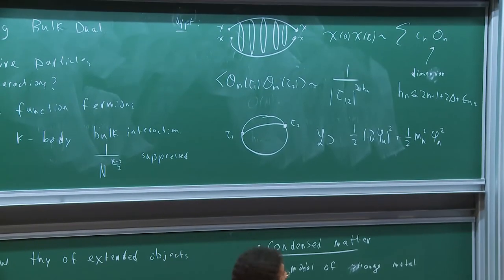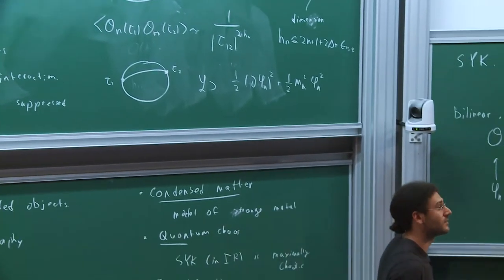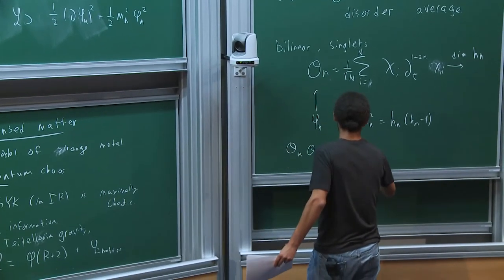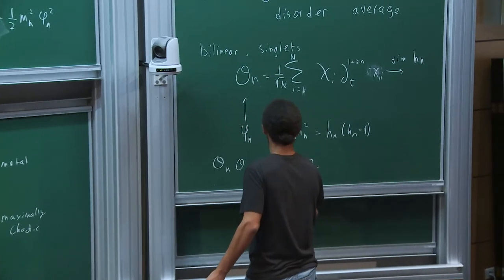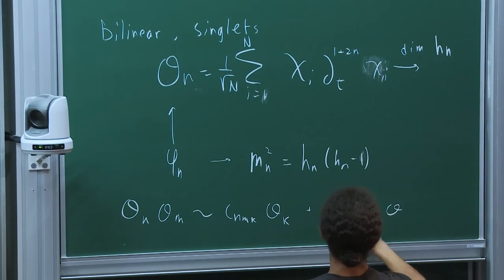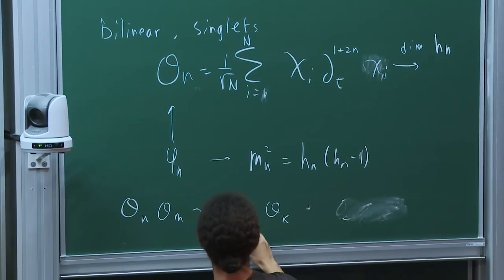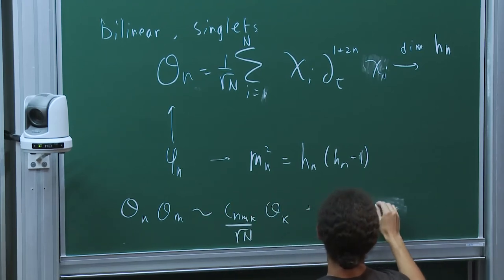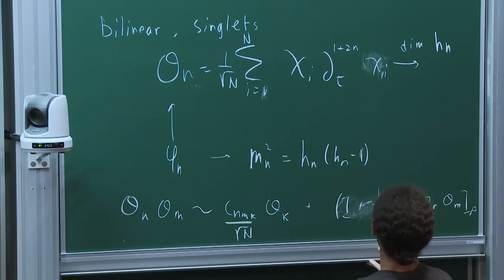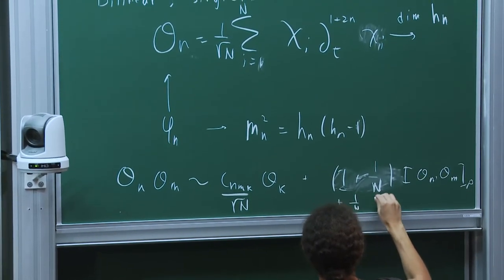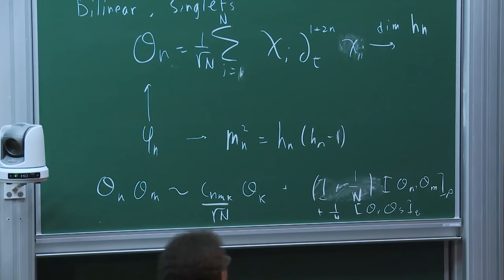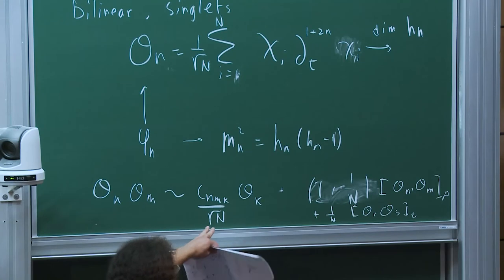At least for the operators, if you take the OPE of two O_n's, you get: O_N O_M ~ C_{NMK} O_K (at leading order in 1/N), plus double-trace terms at order 1/N, plus further double-trace contributions. We'd like to compute all these coefficients. The one I'll compute now is C_{NMK} — the leading one in 1/sqrt(N).